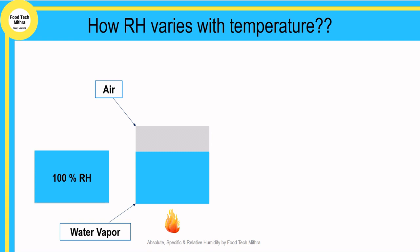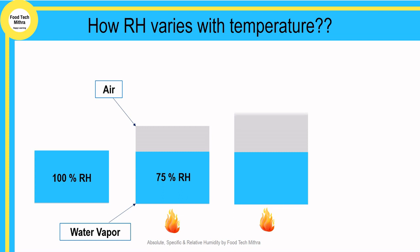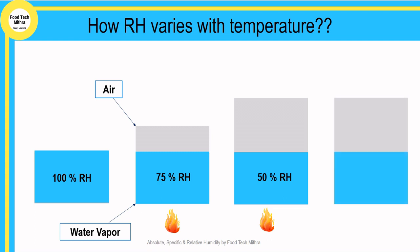Similarly, when the block of air with 75% relative humidity is heated further, it expands further and creates a little more larger space. Now the presence of moisture is only half of the block, so the relative humidity is 50%. On further heating, the relative humidity value continues to decrease as the block of air keeps expanding.